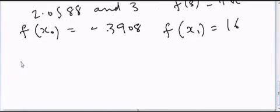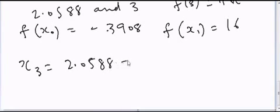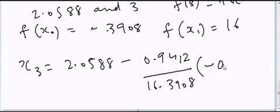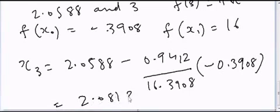And then we can solve again for x3, which is equal to 2.0588 minus [negative 0.9412 divided by 16.3908] times negative 0.3908, and the answer will be equal to 2.0813. So we can keep doing this.